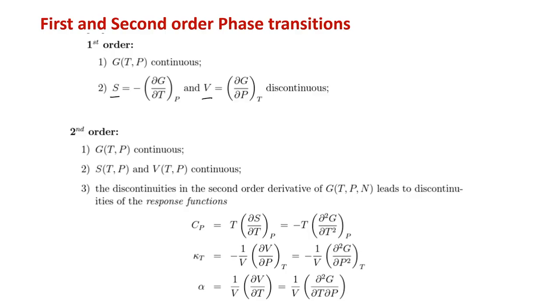In the same spirit, a second-order phase transition is defined as one in which the Gibbs free energy is continuous, and not only that, S and V which were discontinuous in the first order are now continuous. The discontinuity comes in the second derivative of G — one of them is Cp, the specific heat at constant pressure, which is -T (∂²G/∂T²) at constant p. Various other quantities associated with some order parameter show discontinuity at T = Tc.